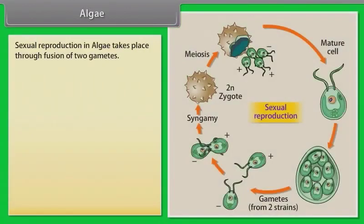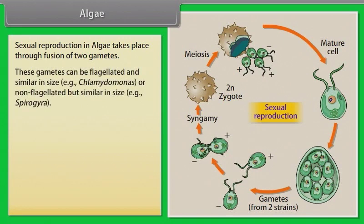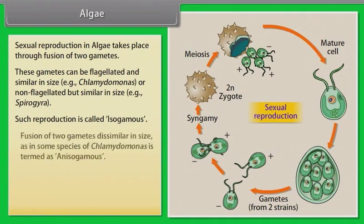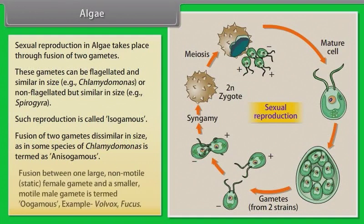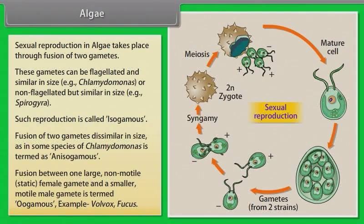Sexual reproduction in algae takes place through fusion of two gametes. These gametes can be flagellated and similar in size, example: chlamydomonas, or non-flagellated but similar in size, example: spirogyra. Such reproduction is called isogamous. Fusion of two gametes dissimilar in size as in some species of chlamydomonas is termed as anisogamous. Fusion between one large, non-motile, static female gamete and a smaller, motile male gamete is termed oogamous, example: volvox, fucus.